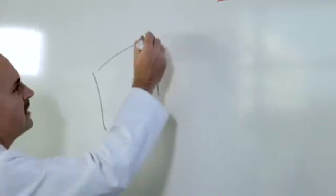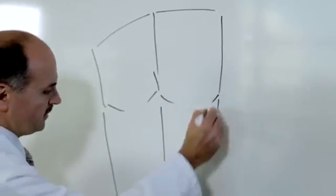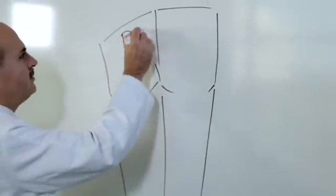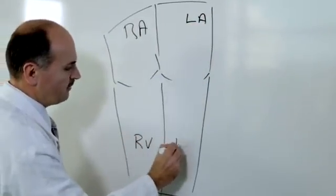If we look at the heart, say this is the upper chamber of the heart here, and these are the lower chamber of the heart here. This is the right atrium, left atrium, right ventricle, left ventricle.